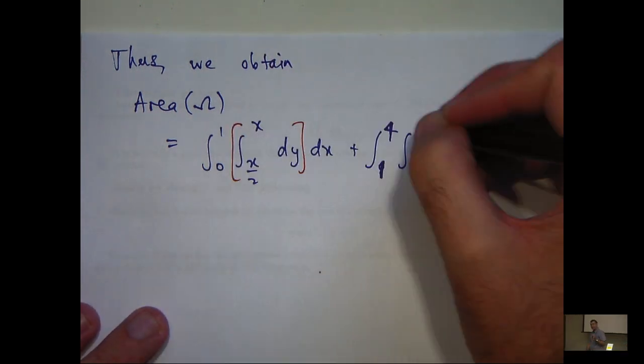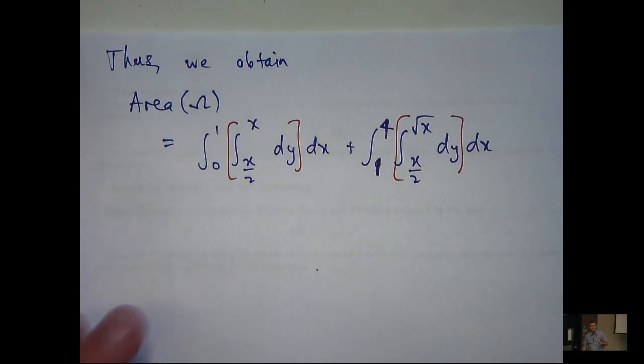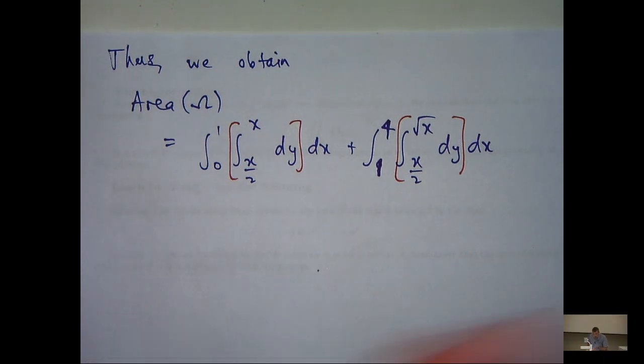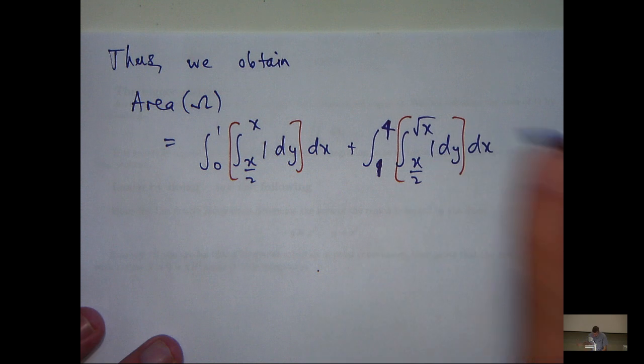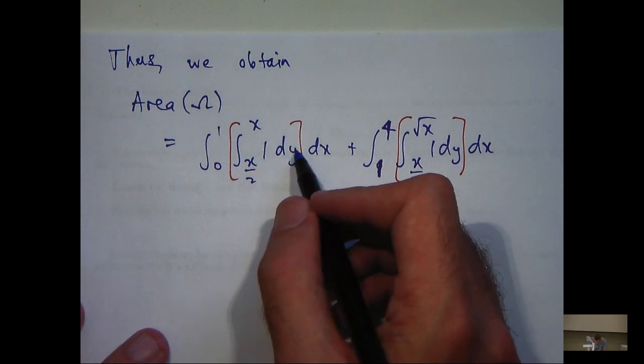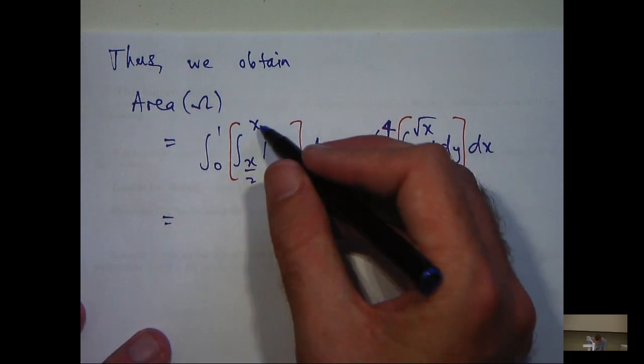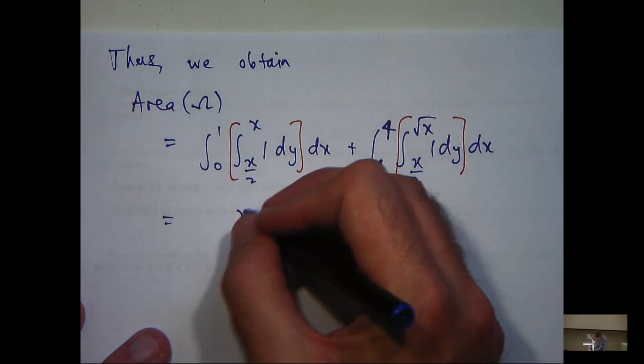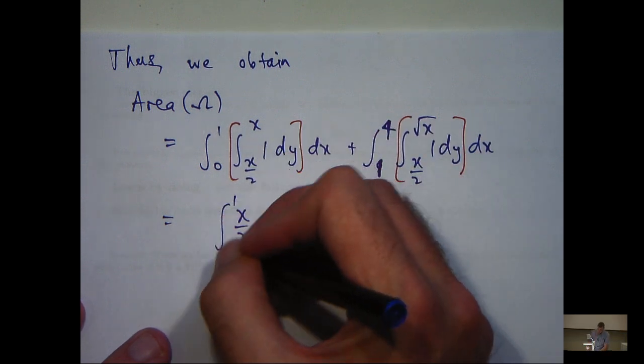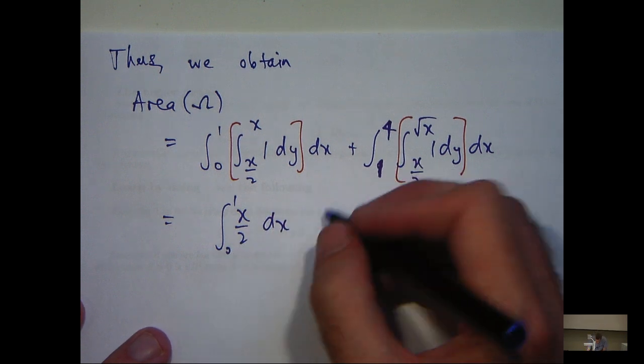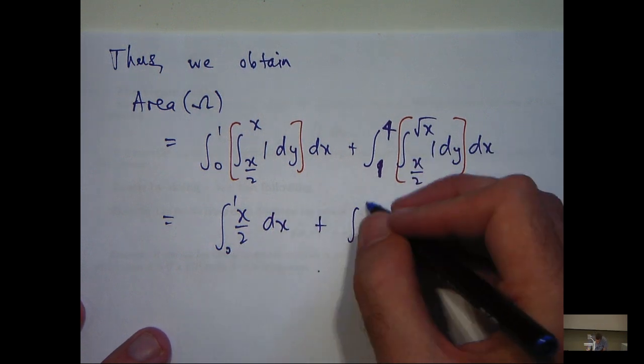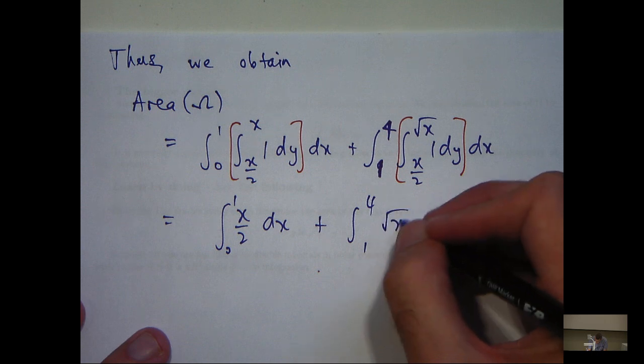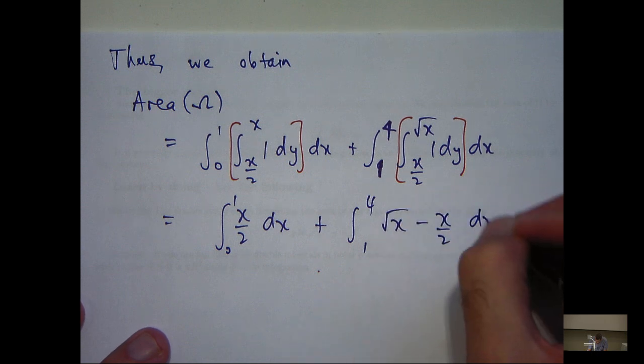So what we need to do now is evaluate these in the usual manner. Now these are really simple, so you can actually do the first integration by inspection. We're integrating 1 with respect to y. So we're actually going to get x minus x on 2 in the inside interval. Now x minus x on 2 is just x on 2. Similarly over here.